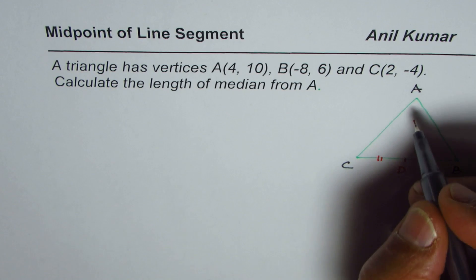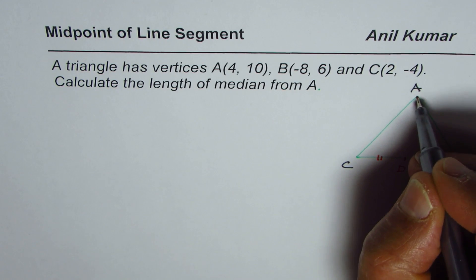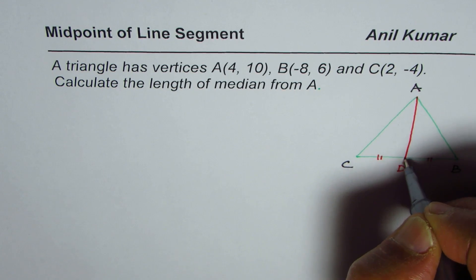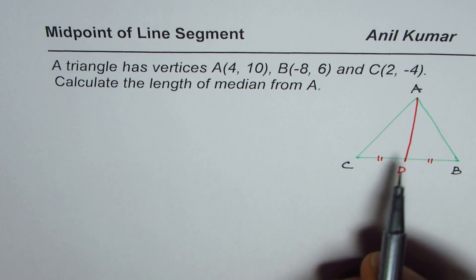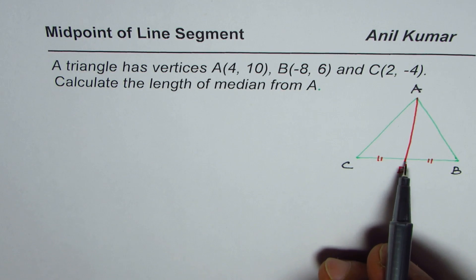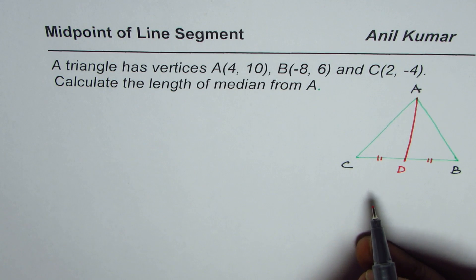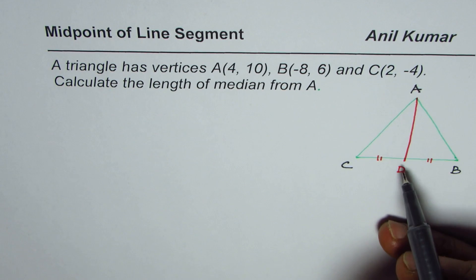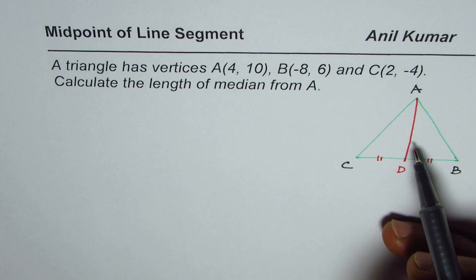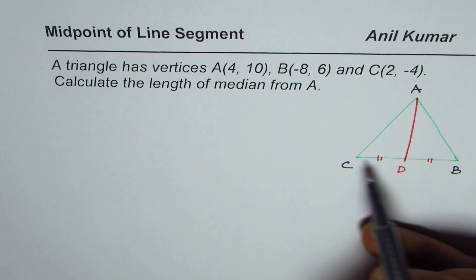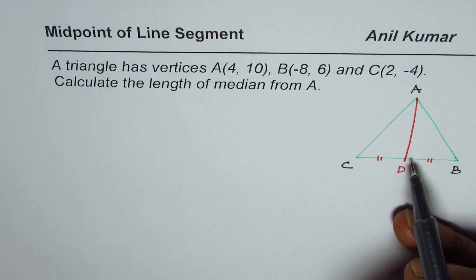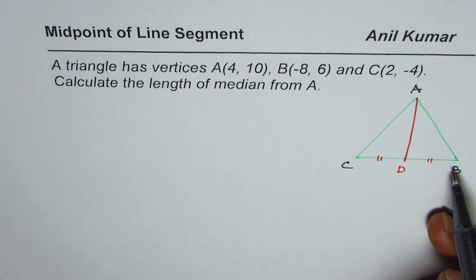Then the median is a line joining A to D. It is important to note that AD is a line from vertex to midpoint of the opposite side. That line may not be perpendicular to the opposite side.